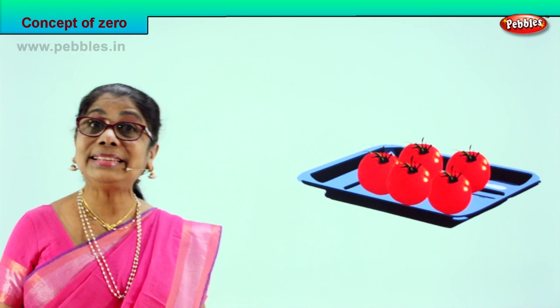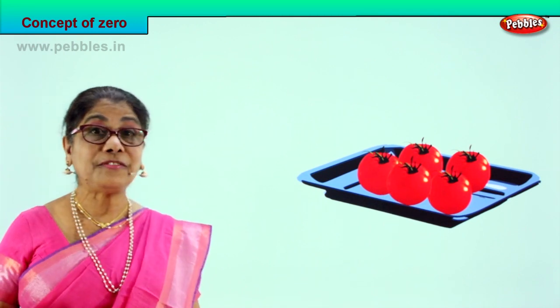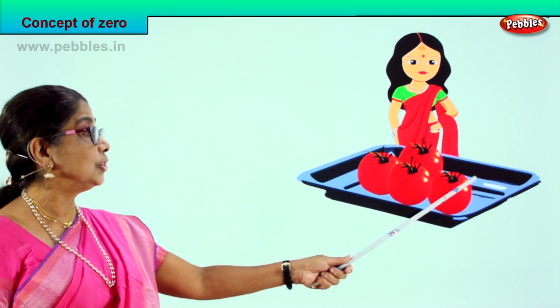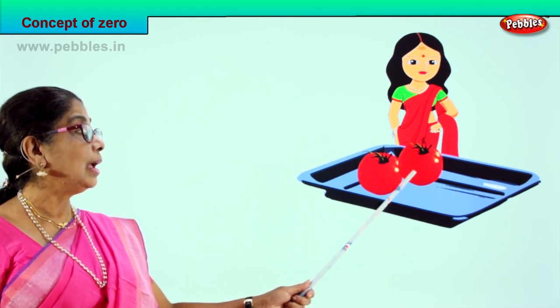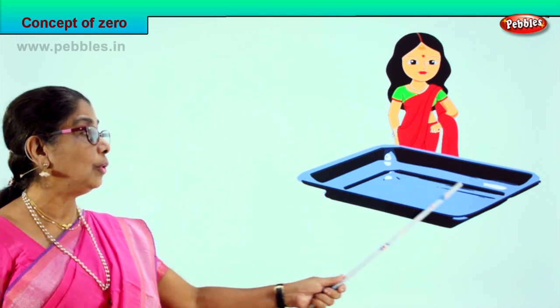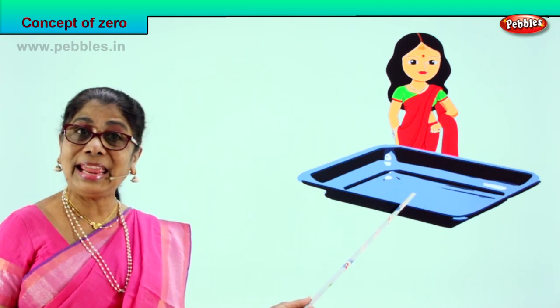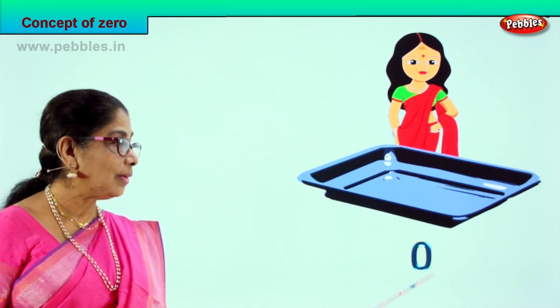Look what we have here — there is a tray full of tomatoes and mama is going to cook. Let's count them all: one, two, three, four, five. There are five juicy tomatoes and mama is ready to make nice tomato chutney for you. She will wash and cut away one by one — one is gone, she took away two, then the third, then the fourth, and finally the last one too. All five tomatoes she used for cooking. How many tomatoes left in the tray?